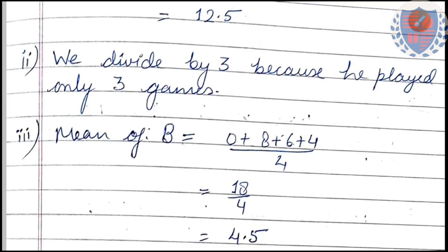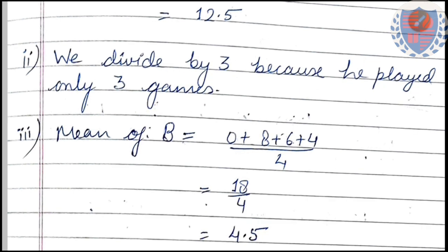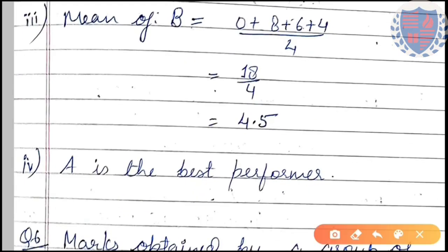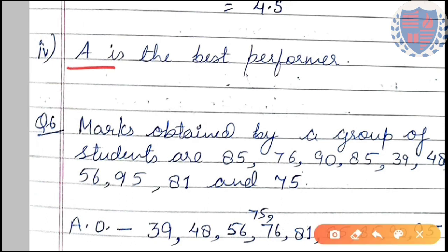Player C played only three games, so to find C's mean we divide by 3. For player B, similarly sum all runs and divide by total number of games — the mean comes out as a decimal. In the fourth part, it is asked who is the best performer. Since the mean of A is maximum, A is the best performer.